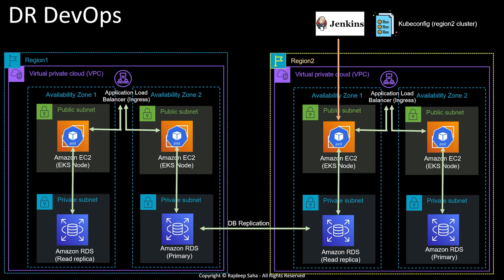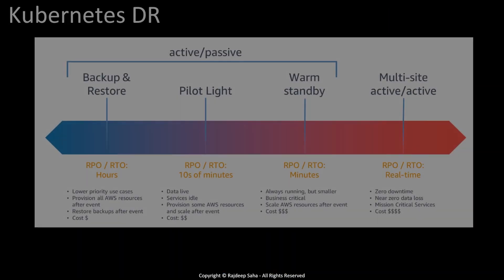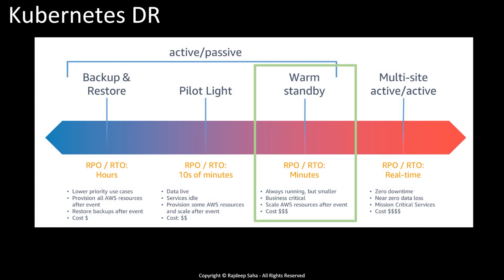A couple of other things to keep in mind: if region one is up and running with lots of traffic and pods have scaled beyond their initial replicas, region two will only be running the initial replica count. So it will take some time for pods in region two to scale up as traffic starts to shift, which could cause a little latency. Tying this to AWS disaster recovery strategies, this approach falls into the warm standby category. Backup and restore assumes no cluster is running and you bring everything up from scratch; pilot light has the database replicated but the EKS cluster not running in another region. In our case it's warm standby because the EKS cluster is always running in the other region, just smaller.